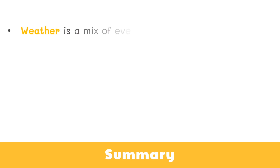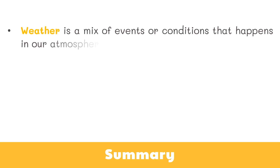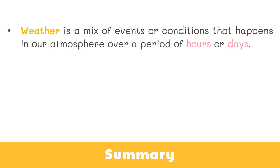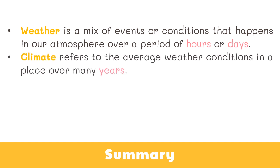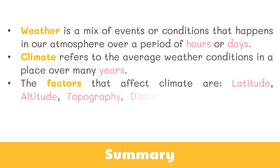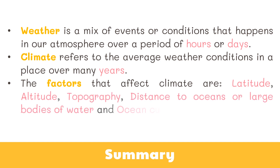To summarize: weather is a mix of events or conditions that happen in our atmosphere over a period of hours or days. Climate, on the other hand, refers to the average weather conditions in a place over many years. The factors that affect climate are latitude, altitude, topography, distance to oceans or large bodies of water, and ocean currents.